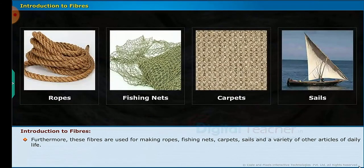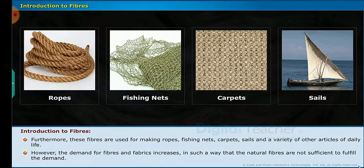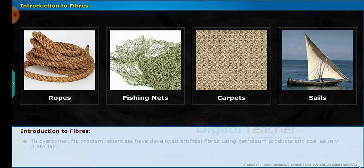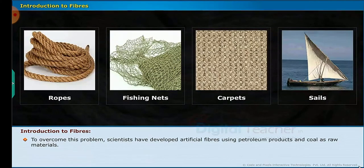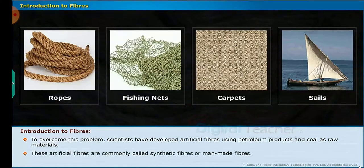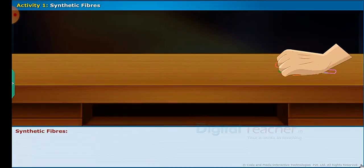Furthermore, these fibers are used for making ropes, fishing nets, carpets, sails and a variety of other articles of daily life. However, the demand for fibers and fabrics increased in such a way that natural fibers are not sufficient to fulfill the demand. To overcome this problem, scientists developed artificial fibers using petroleum products and coal as raw materials. These artificial fibers are commonly called synthetic fibers or man-made fibers. Let us perform a simple activity to understand synthetic fibers in detail.